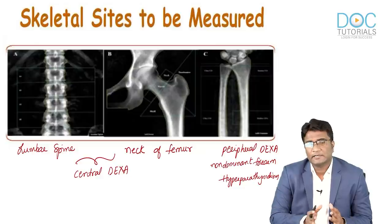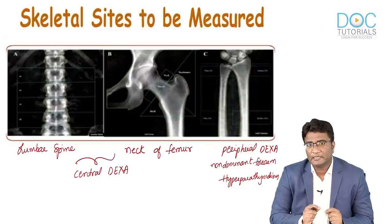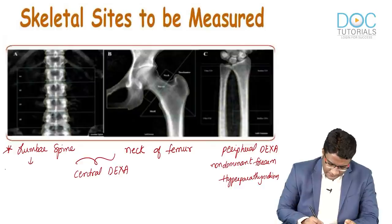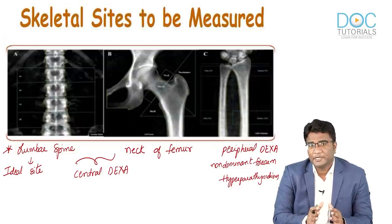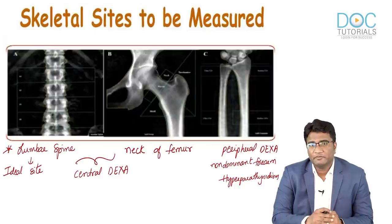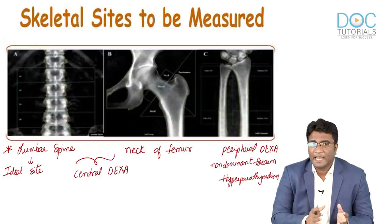Peripheral DEXA is advised when central DEXA cannot be done or when the patient has hyperparathyroidism. Among the lumbar spine and femoral neck, the lumbar spine is the ideal site. The trabecular bone is a better representative of bone metabolism, and the lumbar spine has more trabecular bone than the neck of femur. Central DEXA is preferred over peripheral DEXA and spine DEXA is preferred over hip DEXA.